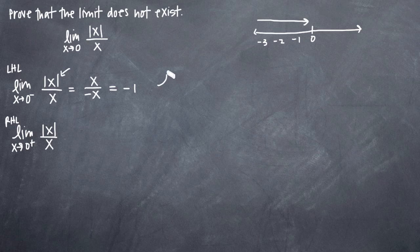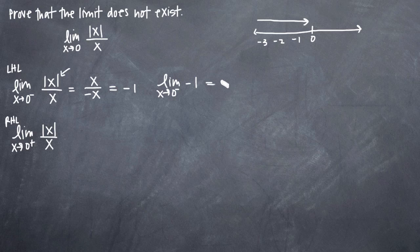So we can call this the limit as x approaches zero from the negative or left-hand side of negative one. If we plug in the value we're approaching — zero — we're still just going to get negative one, because we can't even plug in our value here; it's always negative one. So that limit is going to be negative one, and we can see that we do in fact have a left-hand limit and that it does exist.